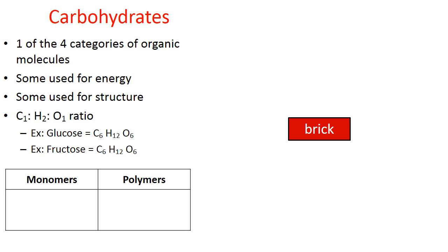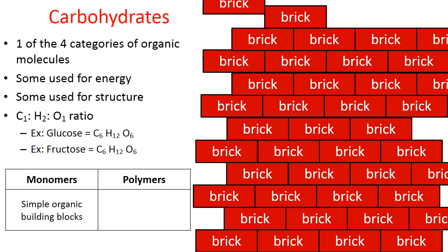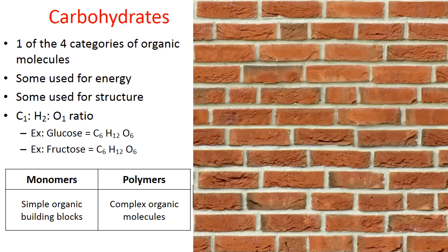When you study organic molecules, you're going to hear a lot about monomers and polymers. A monomer, first of all, is a simple organic molecule — it's a building block, such as a brick. But when you combine a bunch of bricks, you have not a monomer but a polymer — in this case, a brick wall. So we're going to be showing you how monomers are used to construct polymers as we go through carbohydrates.